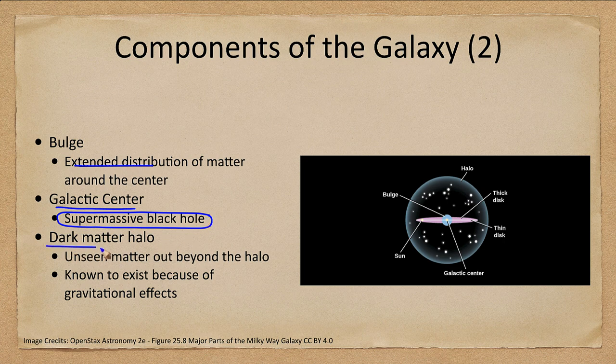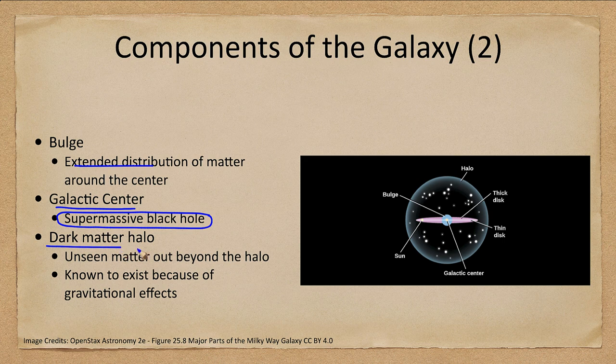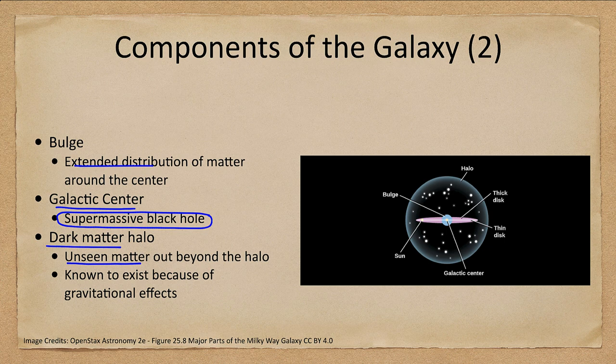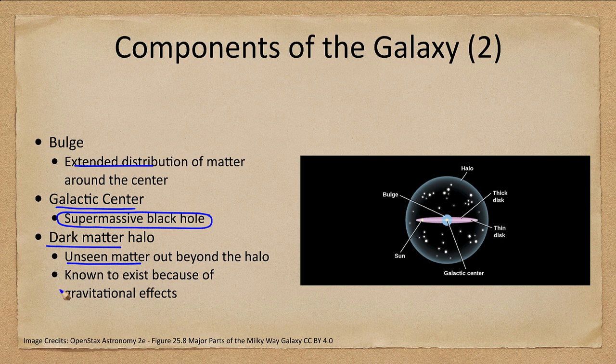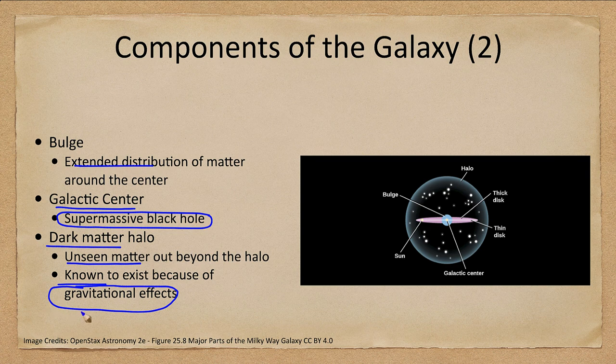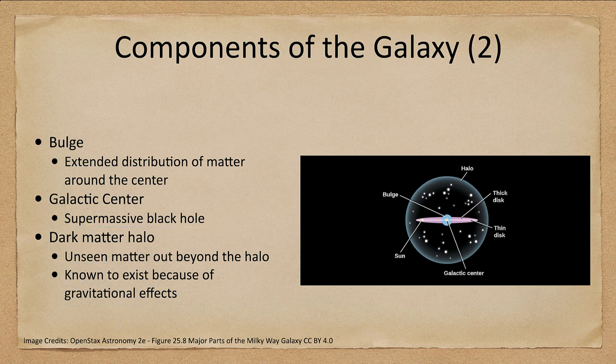And then out beyond all this is the dark matter halo. Dark matter is unseen matter out beyond the actual halo of the galaxy. There is a lot of material out beyond what we actually see for the galaxy. How do we know something's there if we can't see it? Well we notice its gravitational effects on the rest of the stars in the system. They're not moving as they should if the only material there were the visible light. This is why we know that there is dark matter and we will come back and look at that again later on.